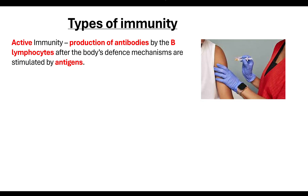Active immunity is where the production of those antibodies is by the B lymphocytes — the B plasma lymphocytes — after the body's defence mechanisms have been stimulated by an antigen. If we're talking about a natural active immunity, we're talking about you being exposed to the pathogen, perhaps through someone coughing or sneezing, or touching a surface. Your immune system then kicks into play and you go through clonal selection and clonal expansion, creating B plasma cells and producing the antibodies.